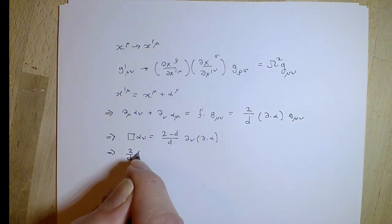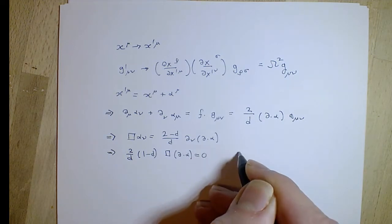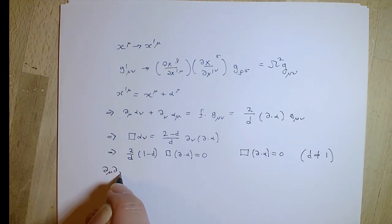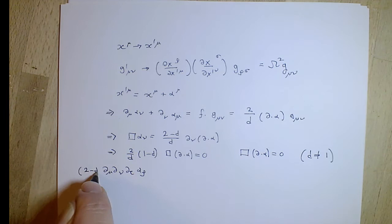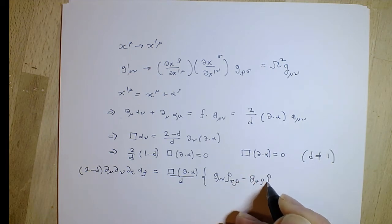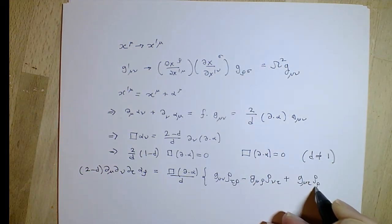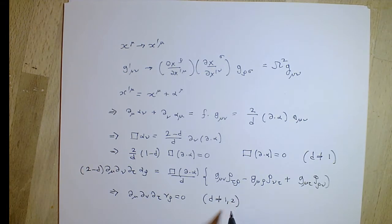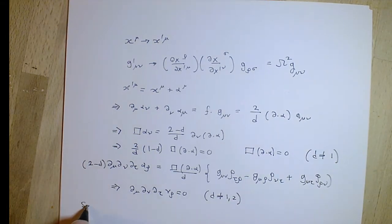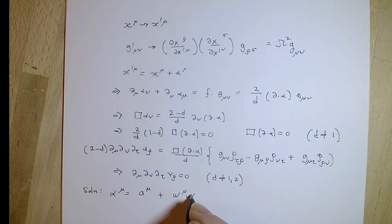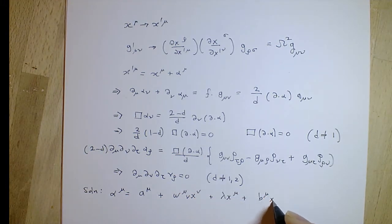Alpha has mu components. You can show that the block of its divergence is zero for d equals one. By taking various derivatives and recombining them, you can show that this combination of d_mu, d_nu, d_tau of alpha_rho is zero. If d is not equal to one or two, that means alpha is at most quadratic: a constant term is just a translation, the linear term is a rotation or dilation, a scale transformation, and a special conformal transformation.